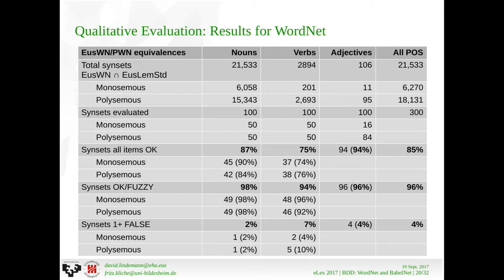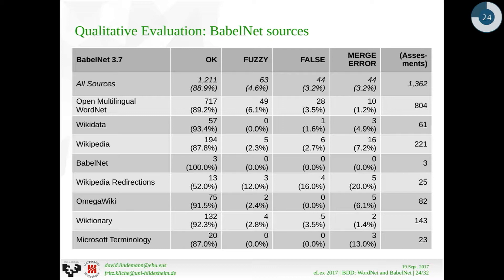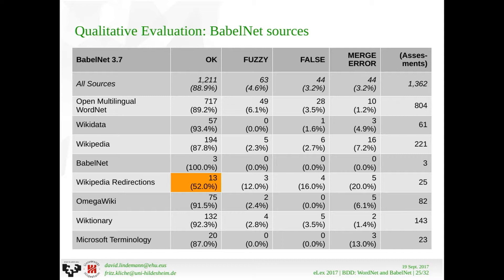These are the overall results for the qualitative evaluation. If we admit some fuzziness, results reach 96%; if we don't admit fuzziness, it is 85%. This is for WordNet. For BabelNet, admitting fuzziness it is also clearly above 90%, so precision doesn't significantly lower. Looking at results by source, there is just one source that yields really bad results: the Wikipedia redirections source. For our purposes this would not be enough, so we would sort that out. The other sources have quite good results.